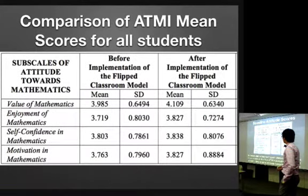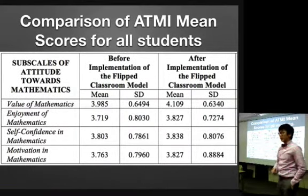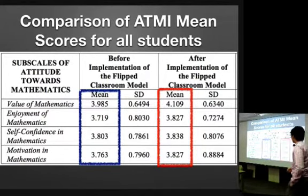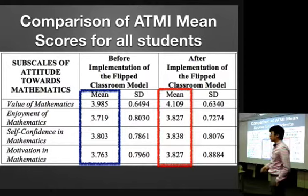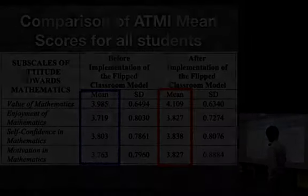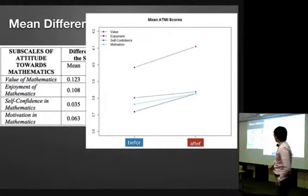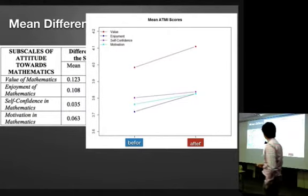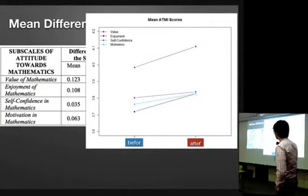Now, after the flipped classroom approach, which is during the 17th week of the second semester, you will see the difference between their ATMI mean score before the flip and after the flip. And this is a graphical display of how the mean difference of my students are shown in this particular graph.